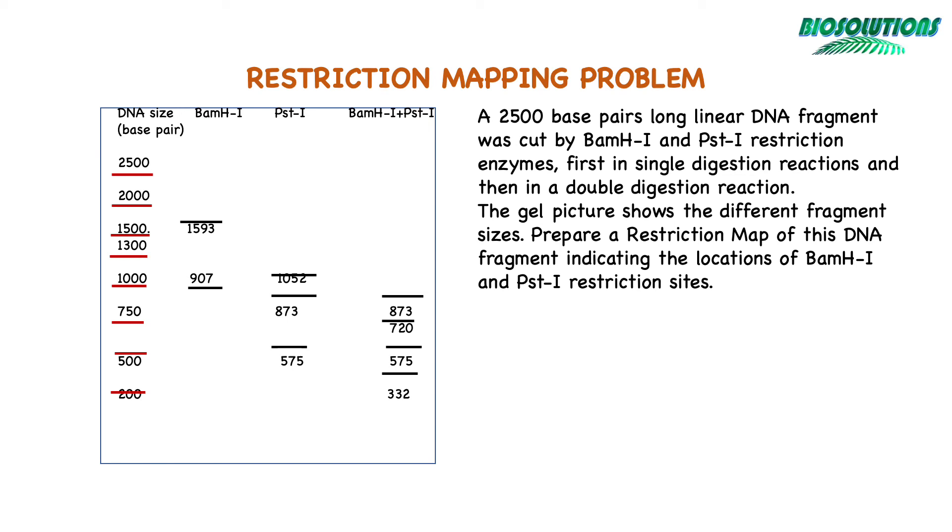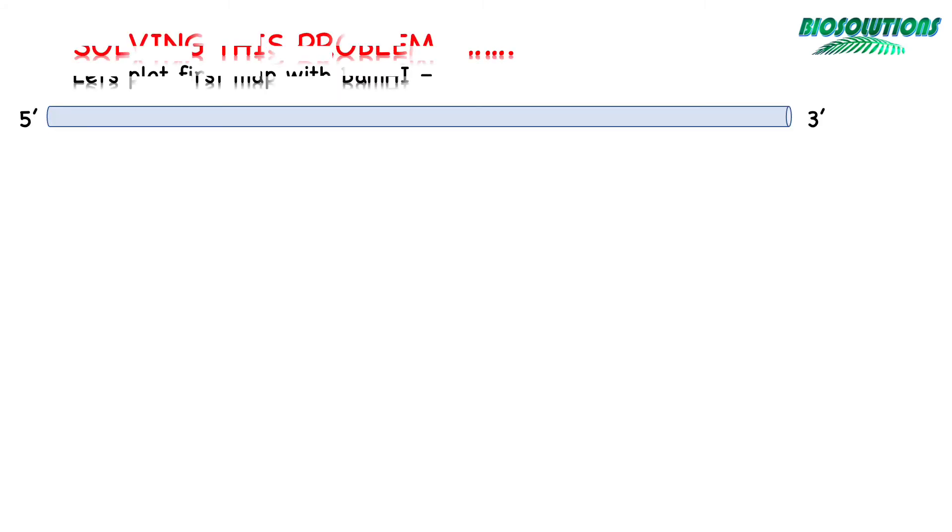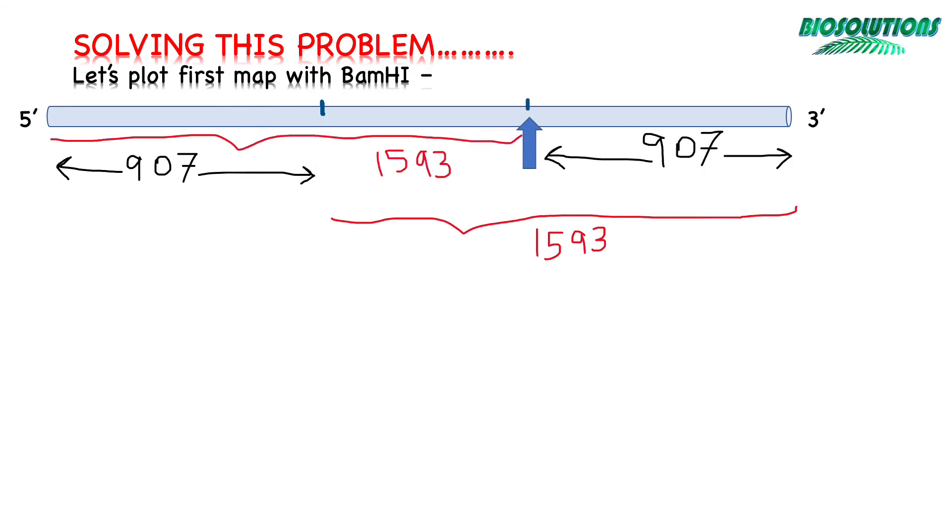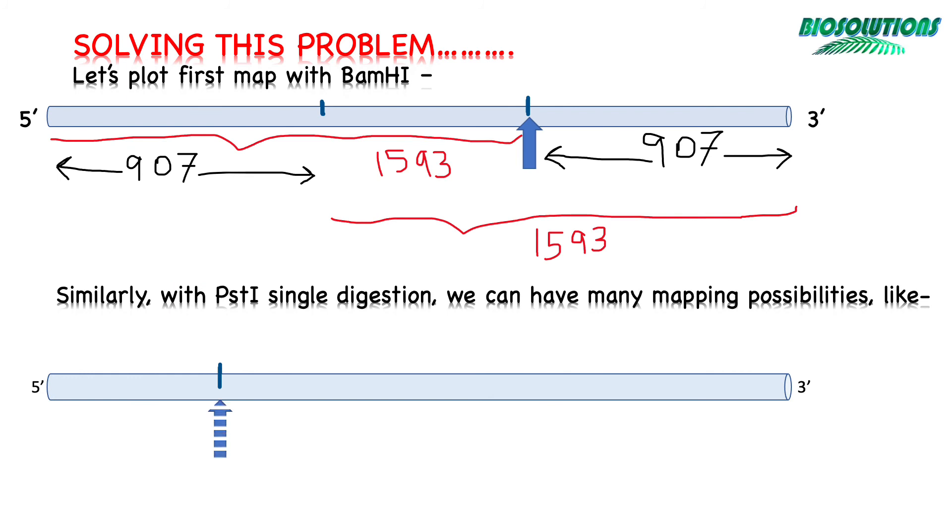Or we can also show data in a table like this. Now let's plot first map with BamHI, as it has the least number of fragments and there should be only one site for BamHI. We can place them in two possibilities as you can see here. Similarly, a map for PstI, for which we should have two restriction sites and therefore many more possibilities, as we can see here in different combinations.